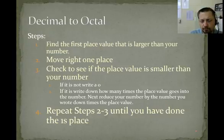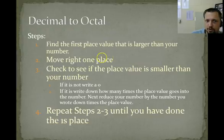When we go from decimal to octal, the rules are highly similar to what we did from decimal to binary. Find the first place value that is larger than your number. Move right one place. Check to see if the place value is smaller than your number. If it's not, write a 0. If it is, write down how many times the place value goes into that number.